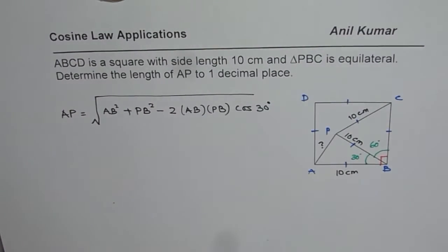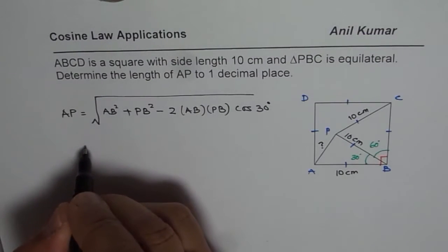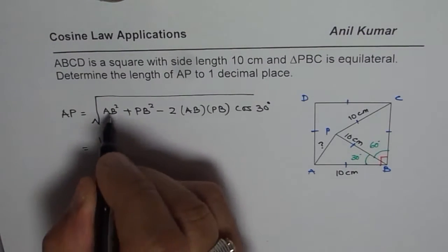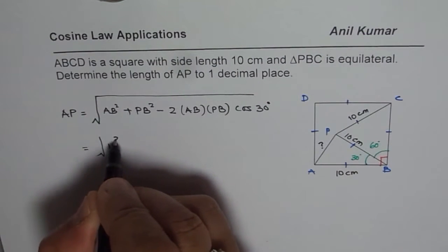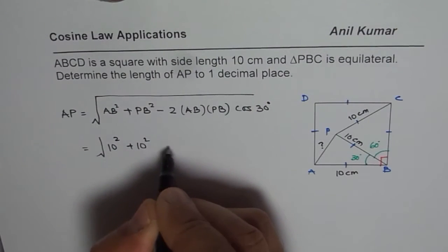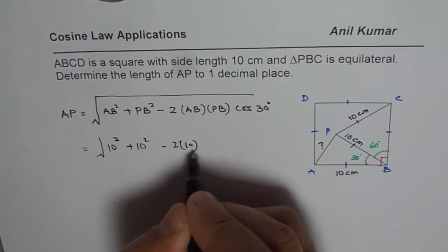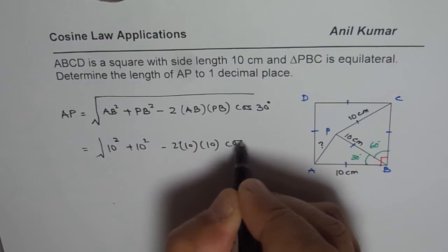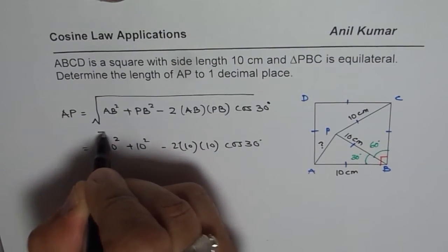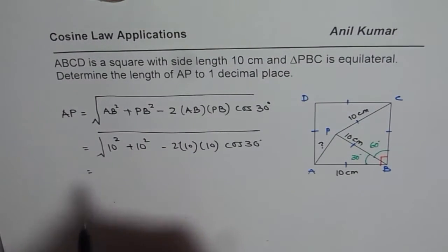So that gives you the answer. That is how you could easily find this value. Since we know all sides are 10, let me just place 10 here. So we get 10 times 10 cos of 30 degrees. So that should give you the answer.